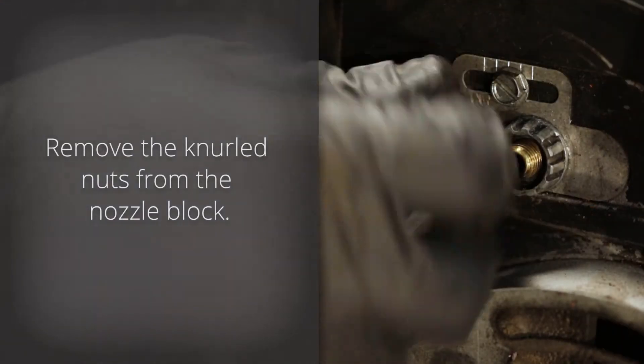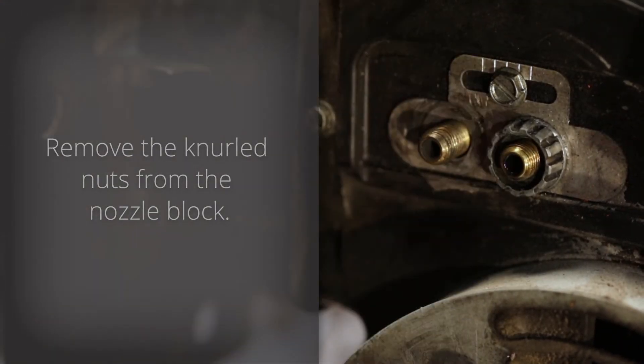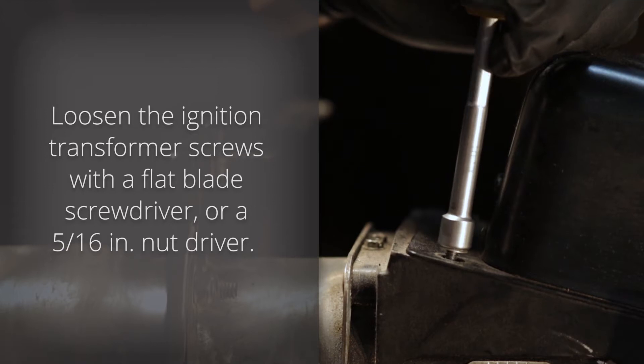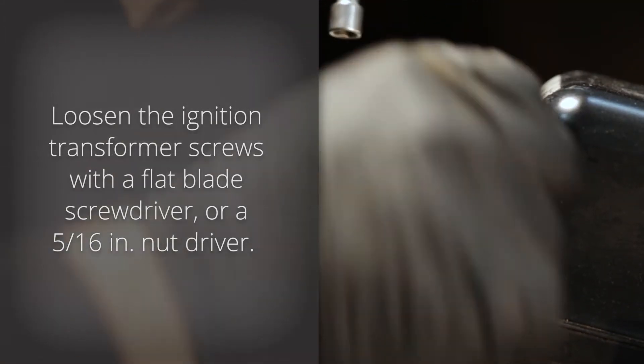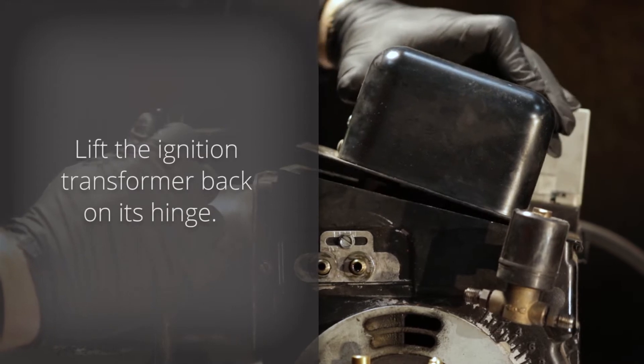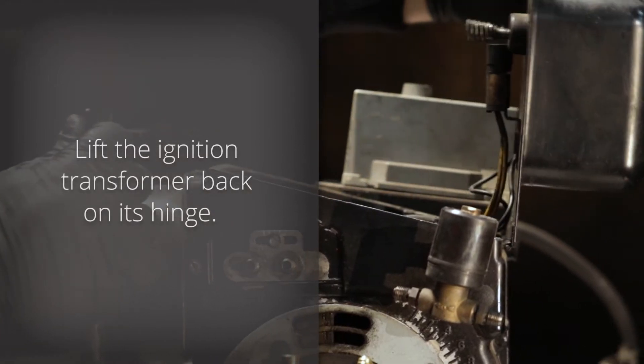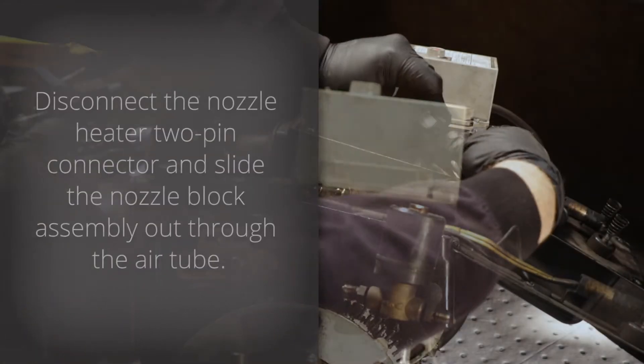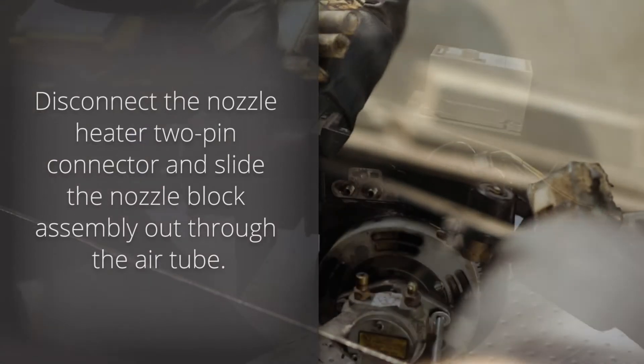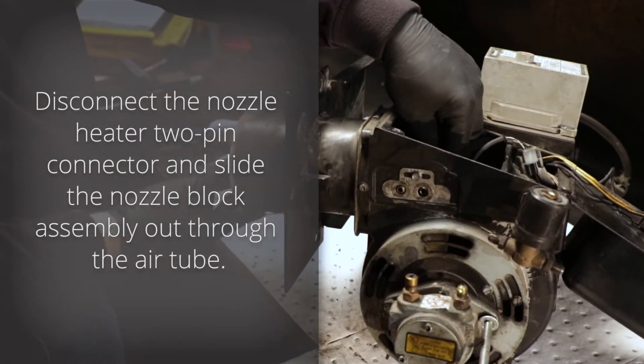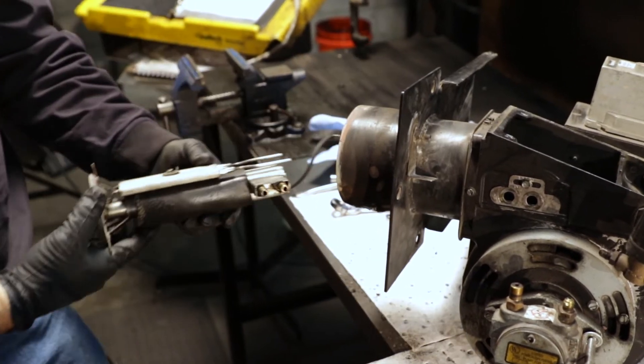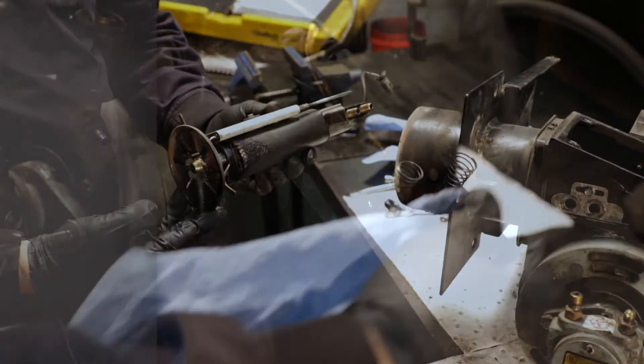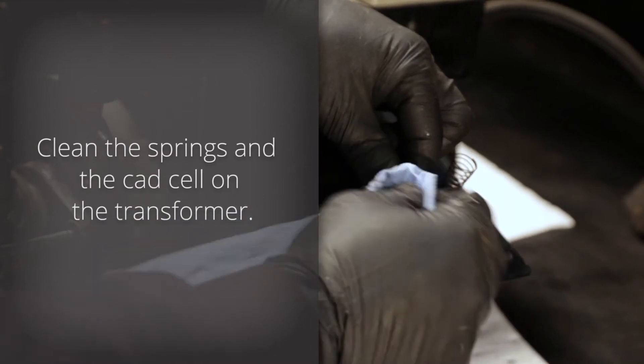Remove the knurled nuts from the nozzle block. Loosen the ignition transformer screws with a flat blade screwdriver or a 5-16th inch nut driver. Lift the ignition transformer back on its hinge. Disconnect the nozzle heater 2-pin connector and slide the nozzle block assembly out through the air tube. Clean the springs and the CAD cell on the transformer.